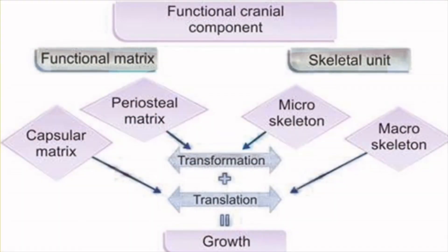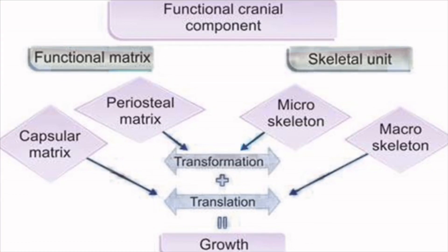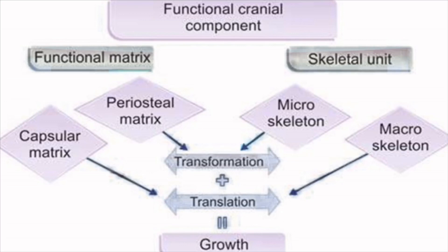The functional matrix is again divided into the periosteal matrix and the capsular matrix. The periosteal matrix consists of all muscles, blood vessels, nerve vessels, and tendons — the soft tissue immediately adjacent to the skeletal unit. The capsular matrix is basically the organs and tissue spaces associated with a specific region; for example, the neurocranium, the orbit, and the oropharynx.